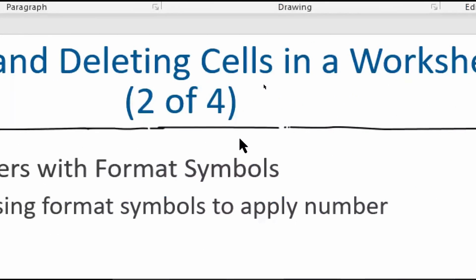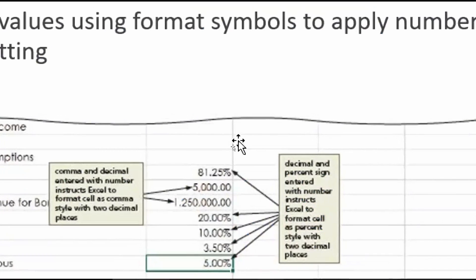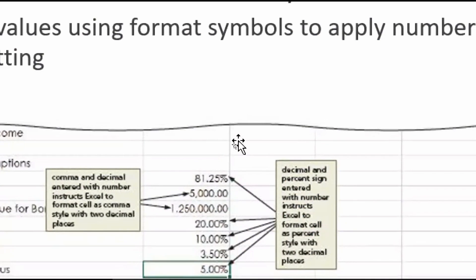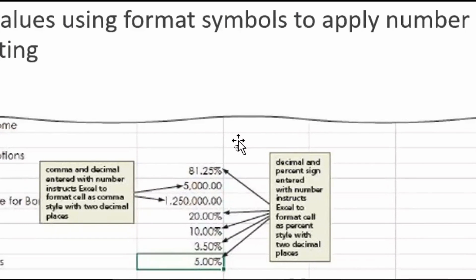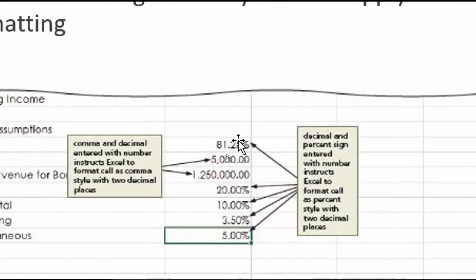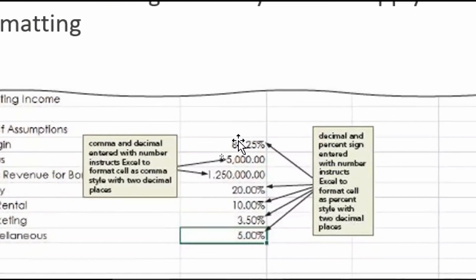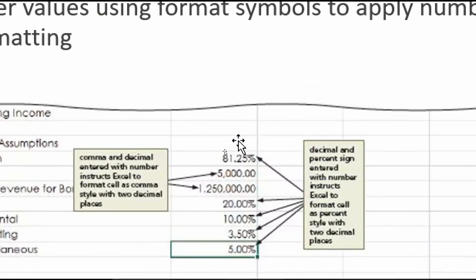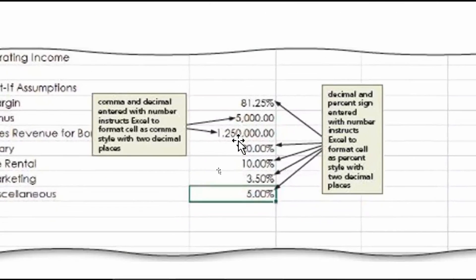When entering numbers with format symbols, you can enter commas, dots, and percent signs in addition to numbers. These are common symbols for any number type. If you enter a percent sign, Excel recognizes it as a percent; a dot is recognized as a decimal; and comma separation works as well.